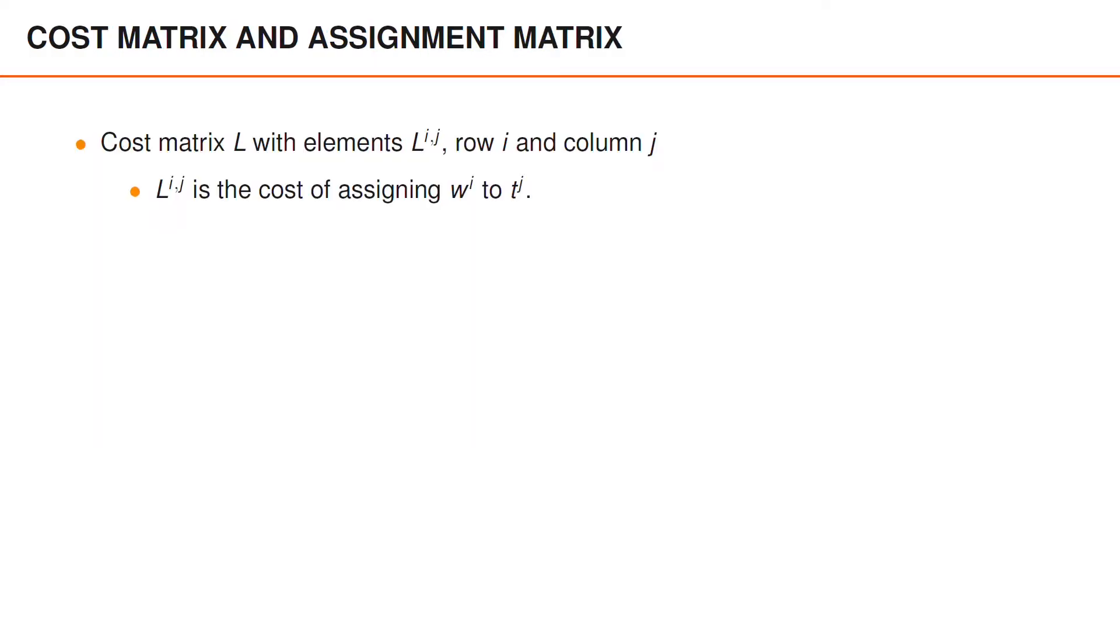A way to mathematically describe this assignment problem is to use a cost matrix and an assignment matrix. The cost matrix L has elements where row i and column j is the cost of assigning worker i to task j. So in the example with 3 workers and 3 tasks, the cost matrix was given in the table before.